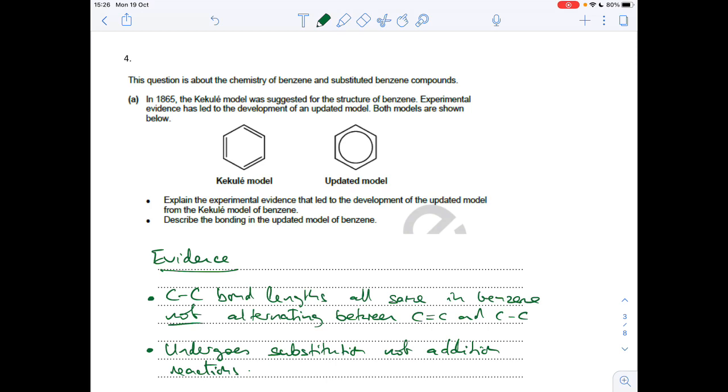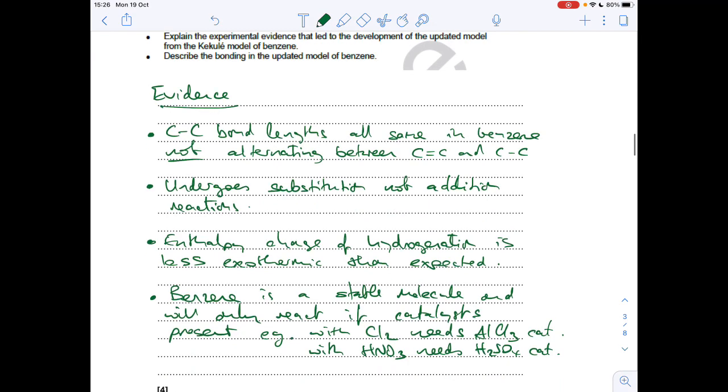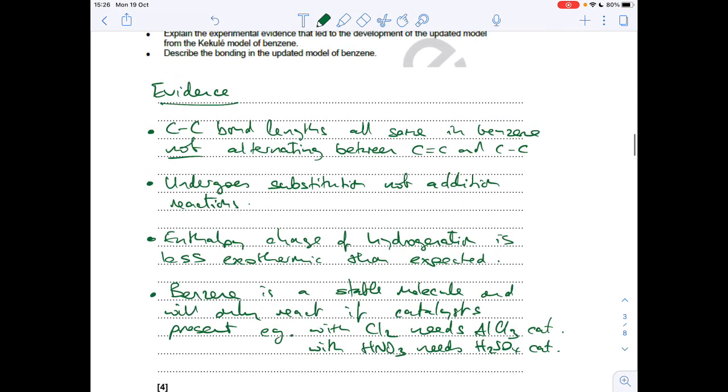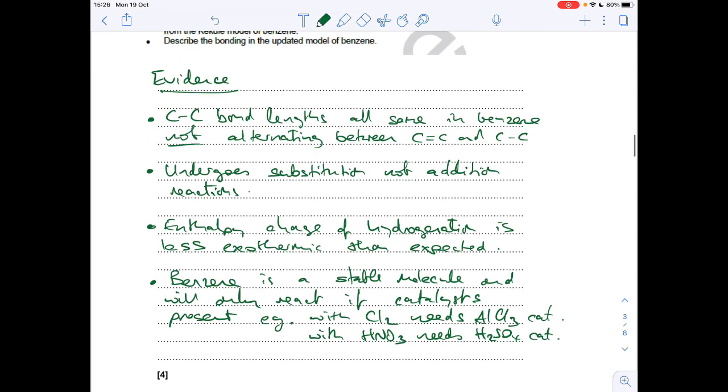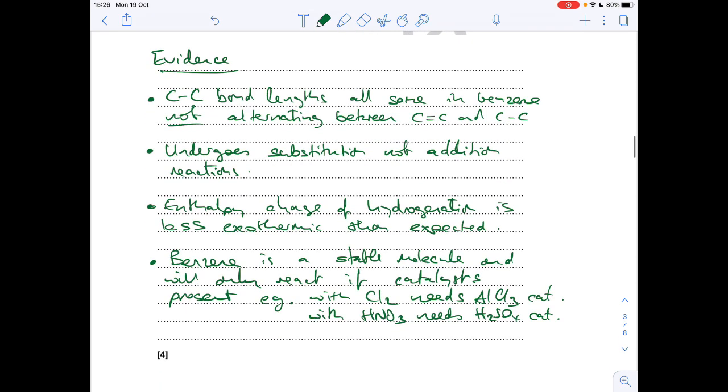Question 4 now, so sort of slightly longer type question. Explain the experimental evidence that led to the development of the updated model from Kekule model of benzene. So I've put all four bits of evidence down, but you actually only need to give two. There was two marks for the evidence and two marks for the bonding. So in terms of evidence, the carbon-carbon bond lengths were all the same in benzene, not alternating between the shorter C=C double bond and the slightly longer C-C single bond. You could have said that it undergoes substitution reactions and not addition reactions.